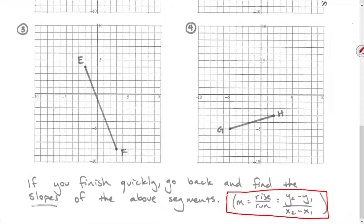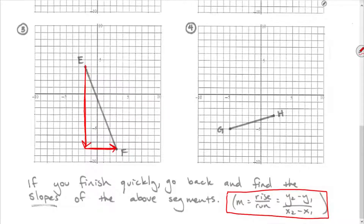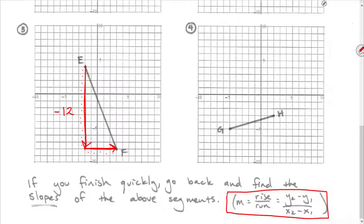The way I typically do slope is the same triangle method, but you must keep track of direction — going up or going down. Going from E to F, going from E down to the right angle point is 12 spaces, but I'm going down, so it's negative 12. Then from the right angle point to F, I'm going right 5, which is positive. The slope is rise over run: negative 12 over 5.